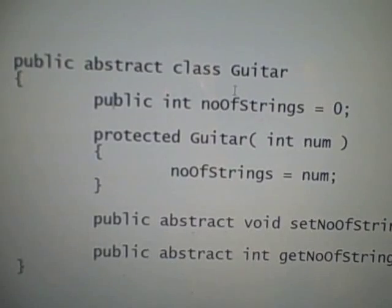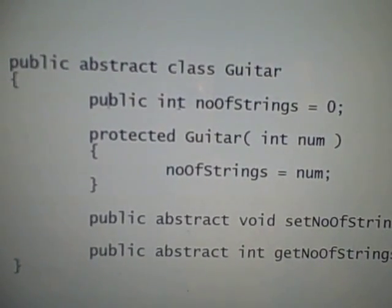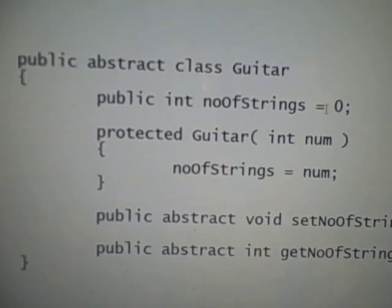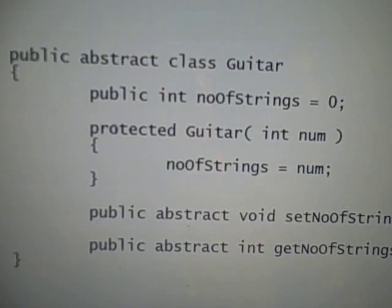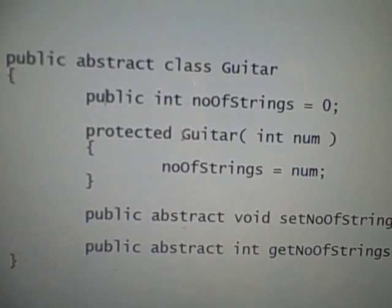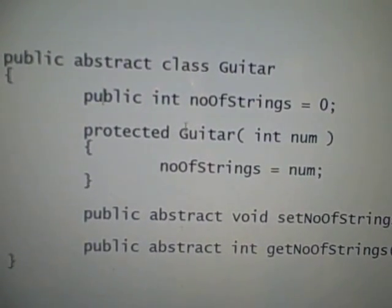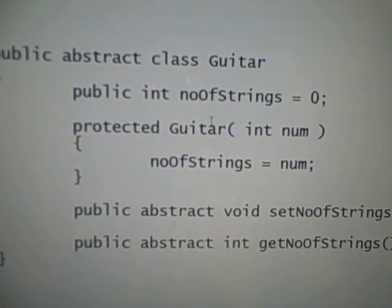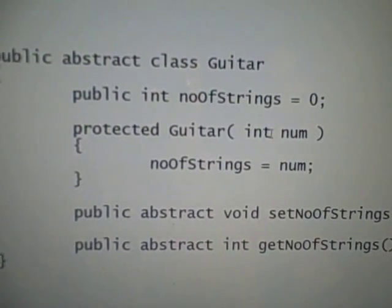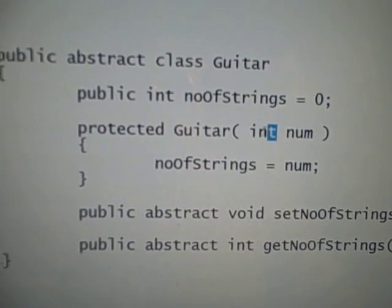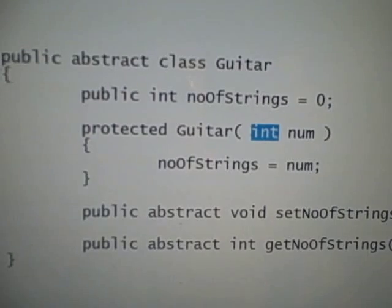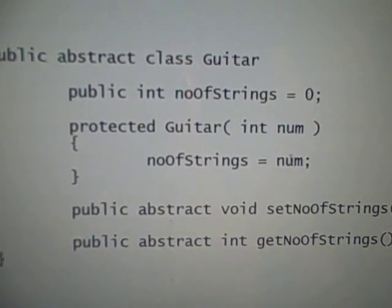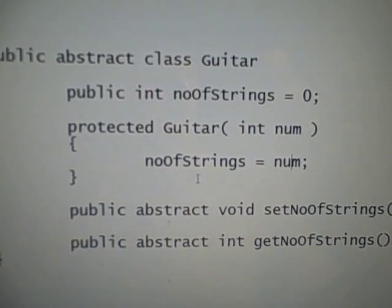What we've done inside the class is we have declared an int variable number of strings and assigned it a value of 0. After that, I've set a constructor of our class Guitar. This is a constructor with a single parameter which takes a parameter of type int. And now here we assign this value, so our instance variable gets the value from here.